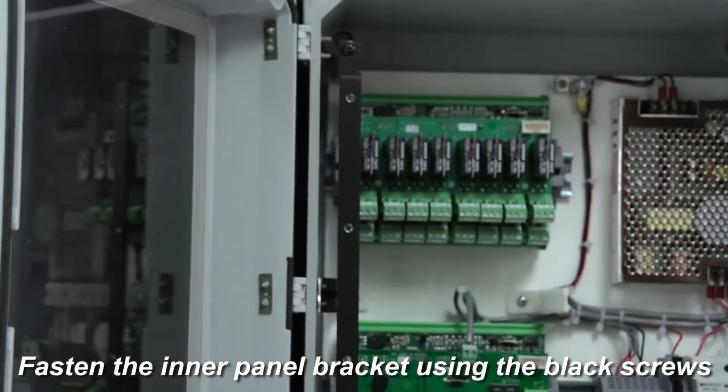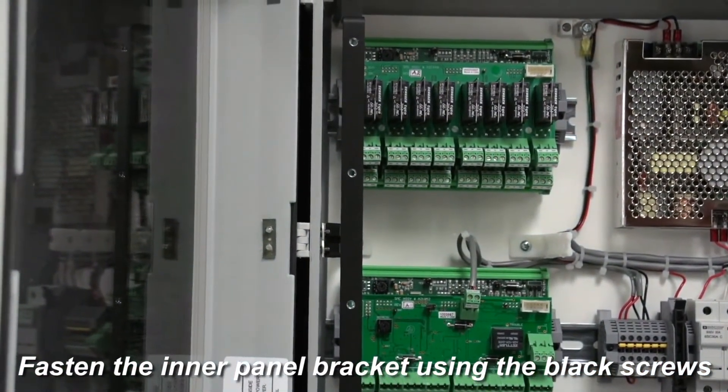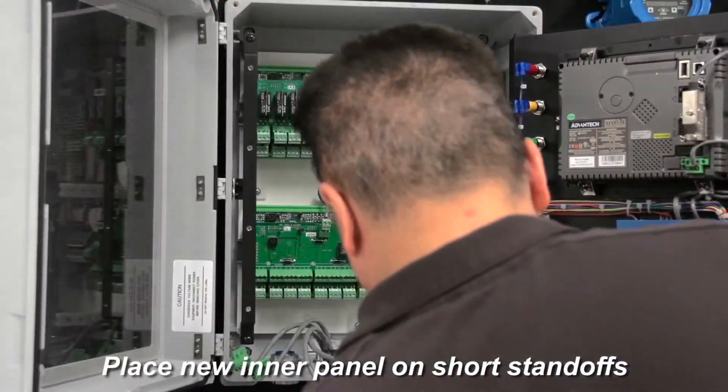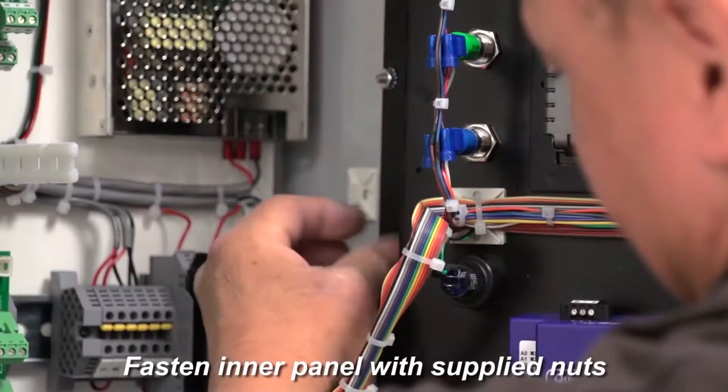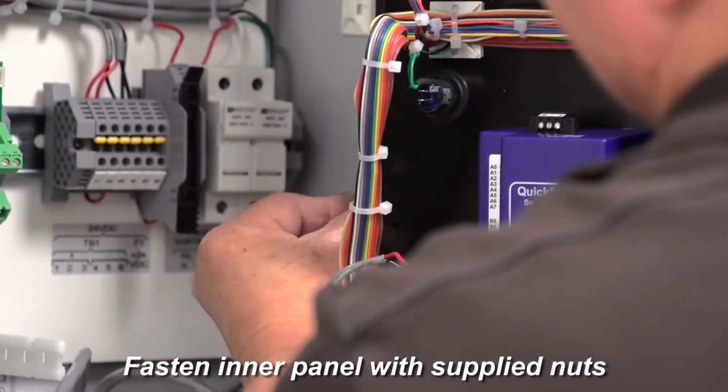Attach the front panel support bracket on the two standoffs and secure with the black screws provided. Attach the new controller front panel to the standoffs on the right and fasten it down with the supplied nuts and then tighten carefully.